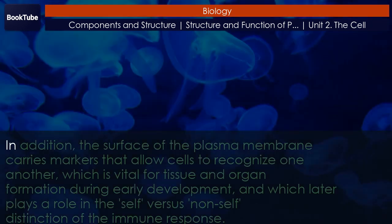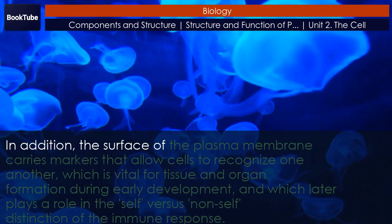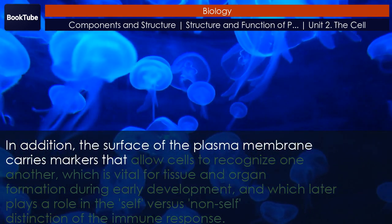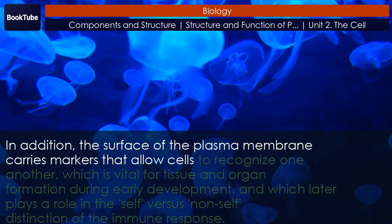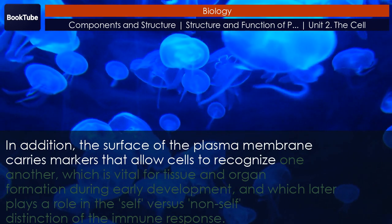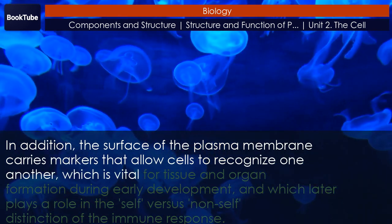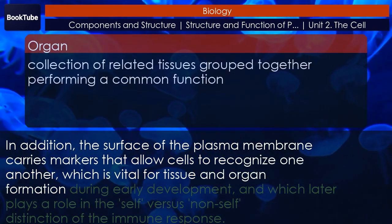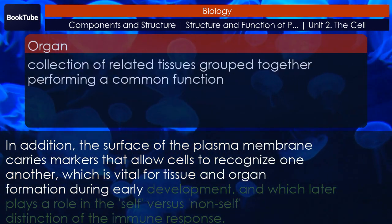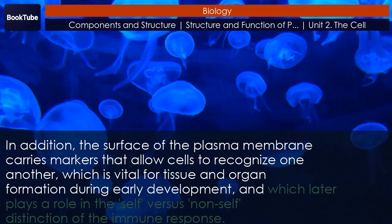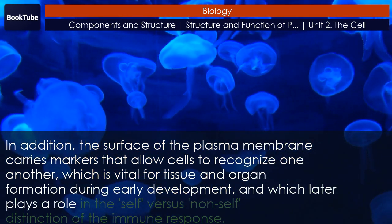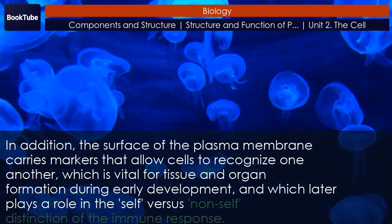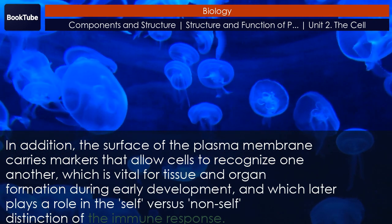In addition, the surface of the plasma membrane carries markers that allow cells to recognize one another, which is vital for tissue and organ formation during early development, and which later plays a role in the self-versus-non-self distinction of the immune response.